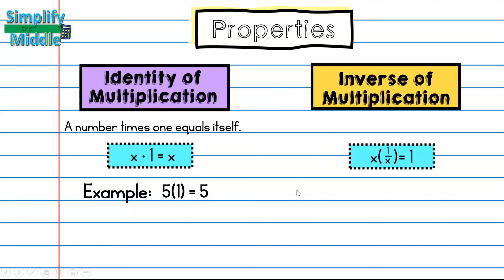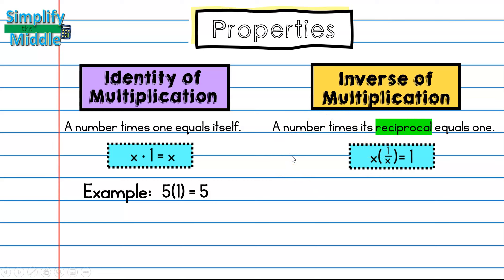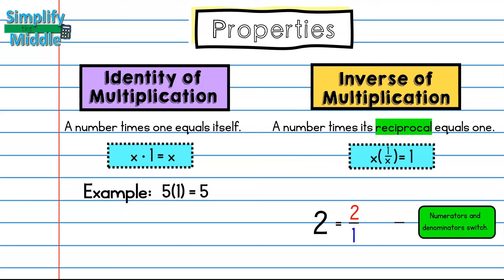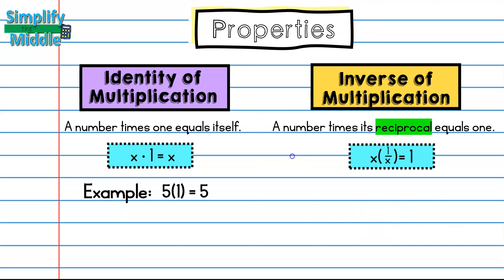For the inverse of multiplication, x times 1 over x equals 1. Notice that the identity multiplies by 1 and the inverse equals 1 — just like with addition. The inverse property of multiplication says a number times its reciprocal equals 1. In a reciprocal, the numerator and denominator switch. If you have a whole number like 2, it's written as 2 over 1, and the reciprocal is 1 half. For example, 3 times its reciprocal — 3 is really 3 over 1, and the reciprocal is 1 third — equals 1.